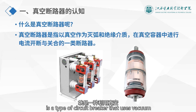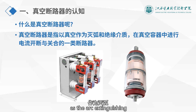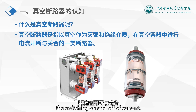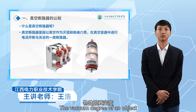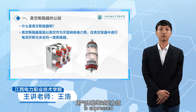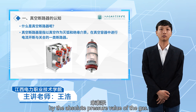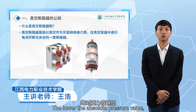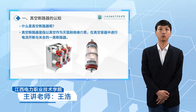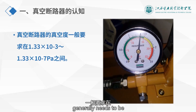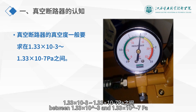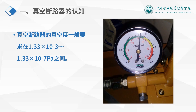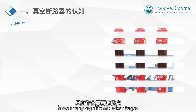A vacuum circuit breaker is a type of circuit breaker that uses vacuum as the arc extinguishing and insulating medium. Inside the vacuum container, it can perform the switching on and off of current. The vacuum degree of an object is expressed by the absolute pressure value of the gas — the lower the absolute pressure value, the higher the vacuum degree. The vacuum degree of a vacuum circuit breaker generally needs to be between 1.33×10⁻⁷ and 1.33×10⁻³ Pascal.